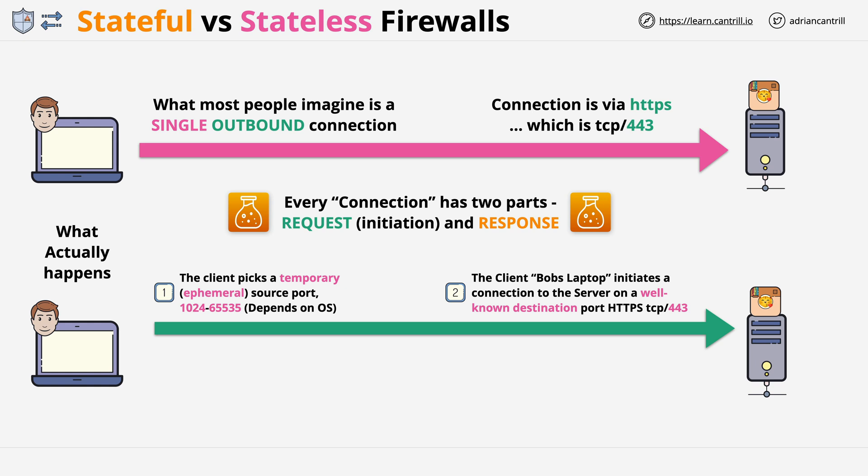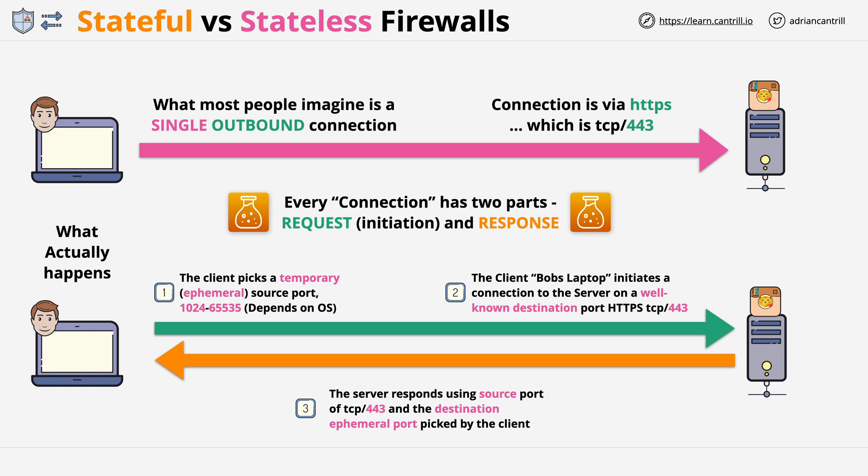This is the request part of the connection — a stream of data to the server, asking for cat pictures or a web page. The server then responds back with the actual data. It connects back to the source IP of the request, Bob's laptop, and to the source port of the request, which is the ephemeral port Bob's laptop has chosen. This part is known as the response. It's these values — source port, source IP, destination IP, and destination port — that uniquely identify a single connection.